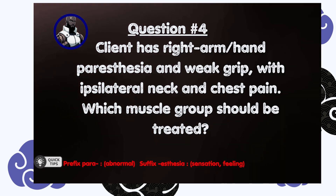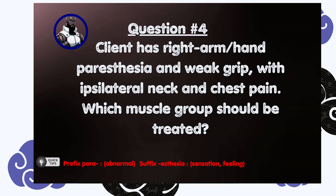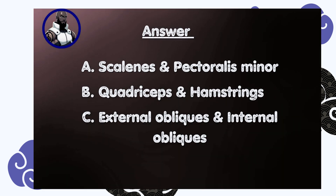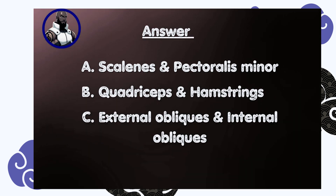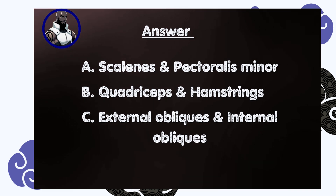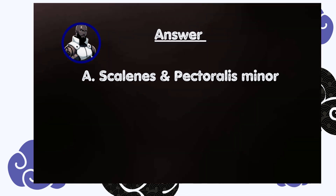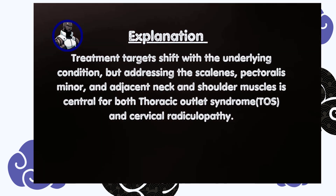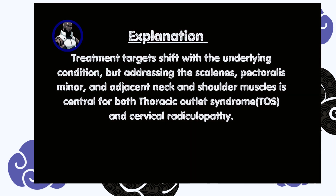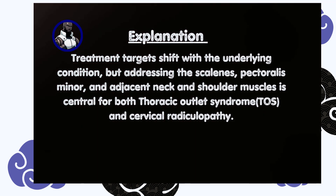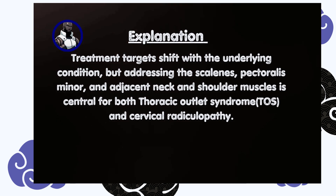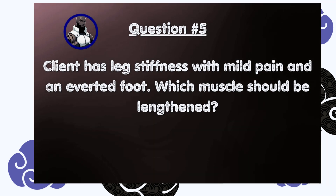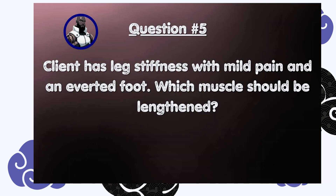Question number four: a client has right arm and hand paresthesia and weak grip with ipsilateral neck and chest pain. Which muscle groups should be treated? A) Scalenes and pectoralis minor, B) Quadriceps and hamstrings, C) External obliques and internal obliques. Answer is A, scalenes and pectoralis minor. Treatment targets addressing the scalenes, pectoralis minor, and adjacent neck and shoulder muscles is central for both thoracic outlet syndrome (TOS) and cervical radiculopathy.